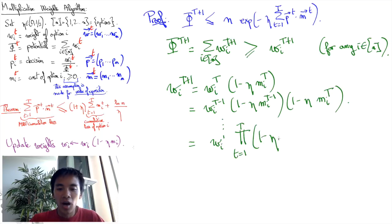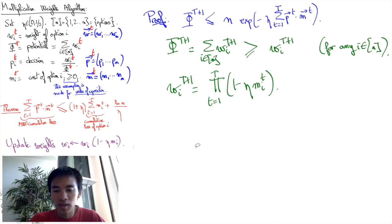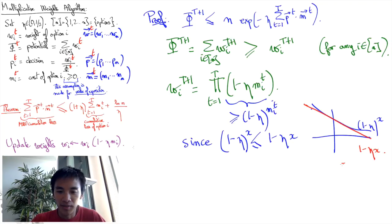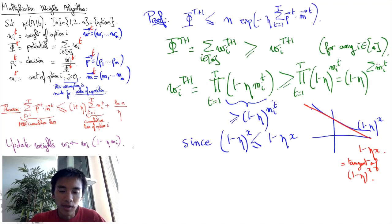Now by induction, these weights are the product of multiplicative terms, each of which includes the loss associated to the option at round t. That's how weights are defined. Now, we can use the inequality 1 minus eta to the power x is smaller or equal to 1 minus eta x. Once again, you can use a convexity argument to get this result, and applying this yields an upper bound that includes an exponentiated cumulative loss that corresponds to the option.